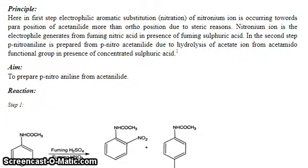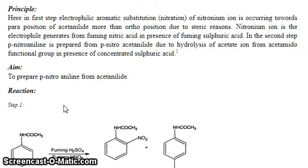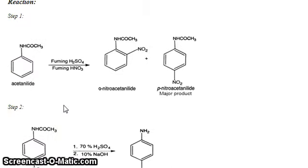The nitronium ion is the electrophile, generated from fuming nitric acid in the presence of fuming sulfuric acid. In the second step, paranitroaniline is prepared from paranitroacetanilide by hydrolysis of the acetamido functional group in the presence of concentrated sulfuric acid.